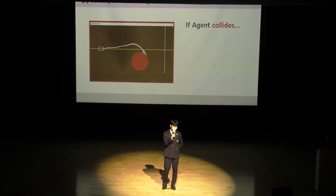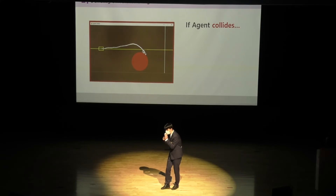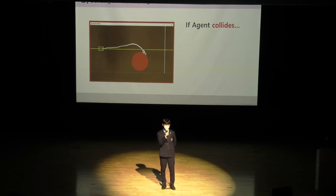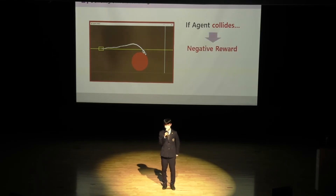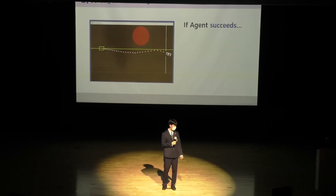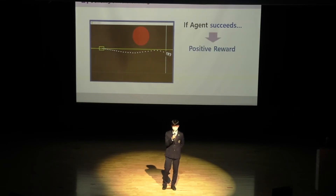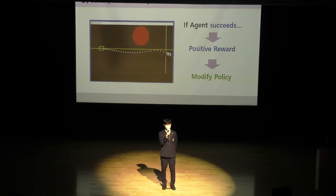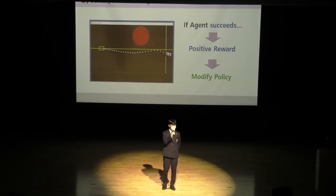When I said the agent remembers the consequences of its actions, I mean it receives a corresponding reward. For example, if the agent crashes, it gets a negative reward and uses that negative experience to modify its policy so it does not crash next time. Conversely, if the agent avoids the obstacle and reaches the finish line, it gets a positive reward and uses this to further refine its policy. By repeating this process, the agent learns the relationship between its actions and rewards, and we can find the optimal policy that brings the biggest reward.